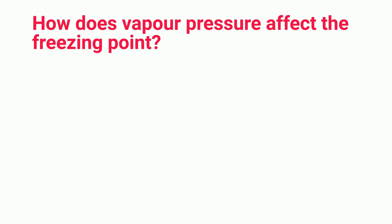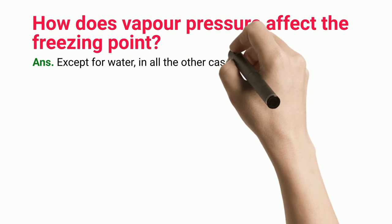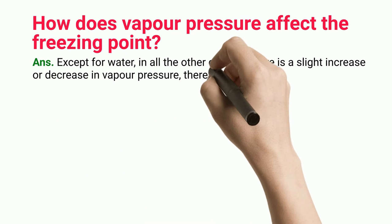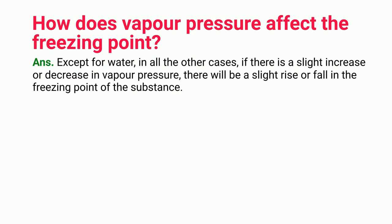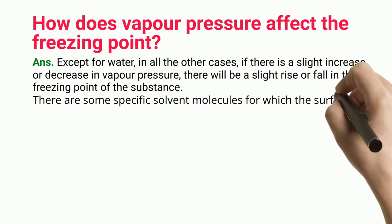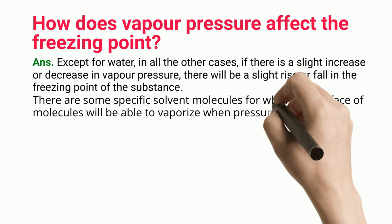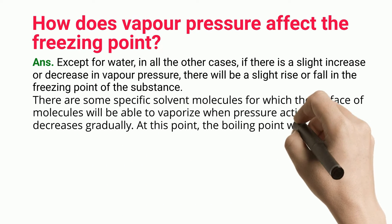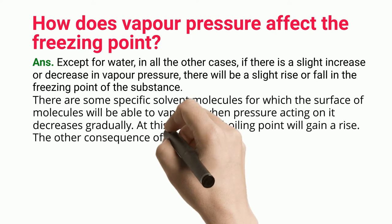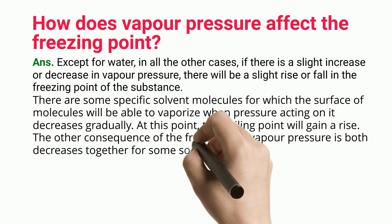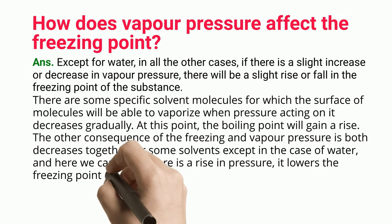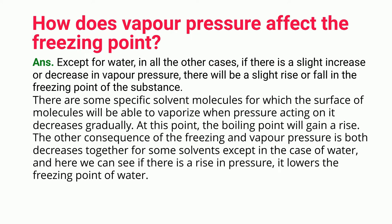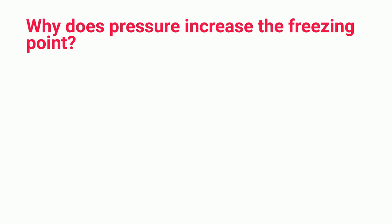How does vapor pressure affect the freezing point? Except for water, in all other cases, if there is a slight increase or decrease in vapor pressure, there will be a slight rise or fall in the freezing point of the substance. There are some specific solvent molecules for which the surface will be able to vaporize when pressure acting on it decreases gradually, at which point the boiling point rises. For some solvents, freezing point and vapor pressure both decrease together, except in the case of water, where a rise in pressure lowers the freezing point.